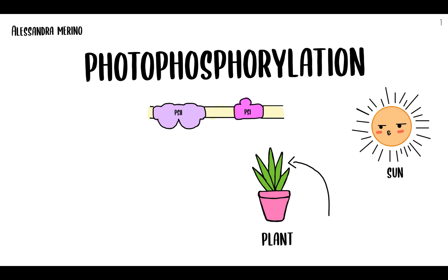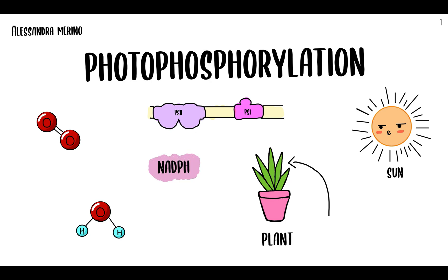The first difference from oxidative phosphorylation is that in oxidative phosphorylation the electron donor is NADH and the acceptor is oxygen, which forms water in the end, and it's part of the electron transport chain. In photophosphorylation however, it's the opposite — water is the electron donor and NADPH is formed in the end.